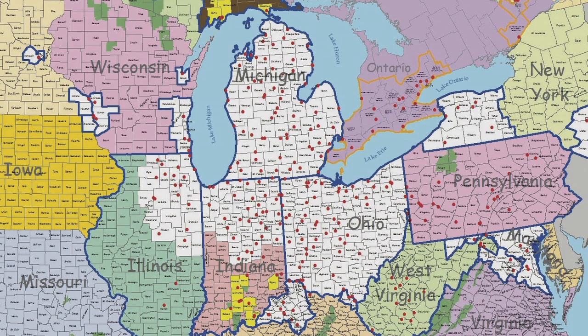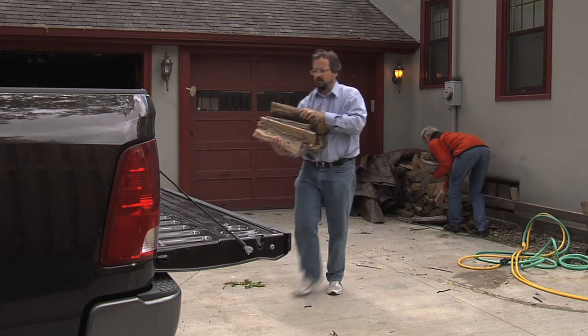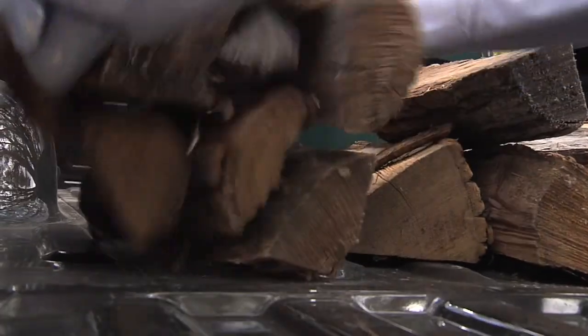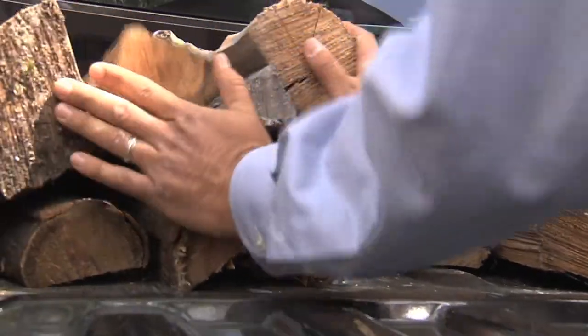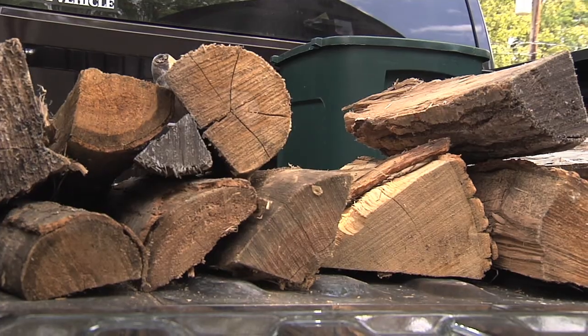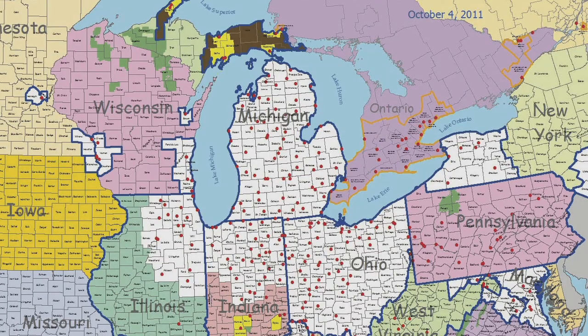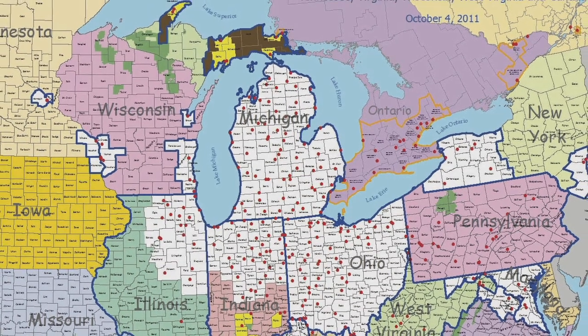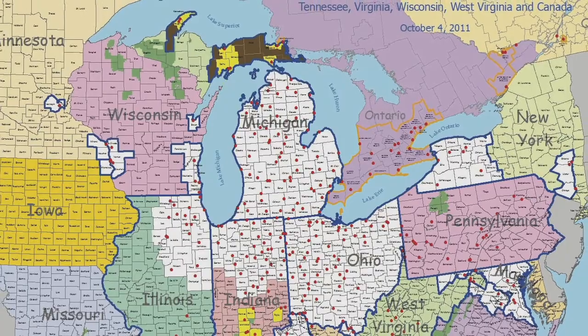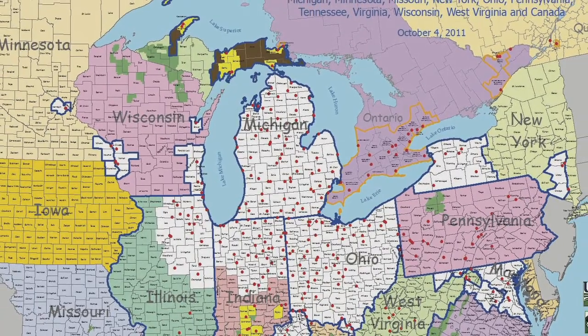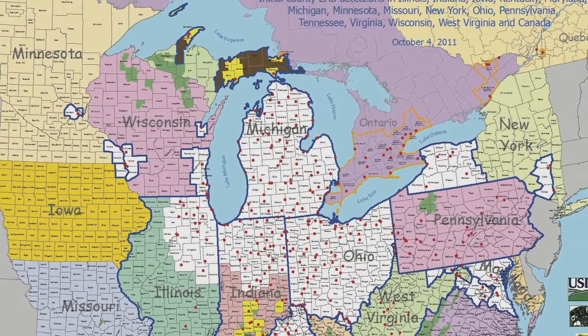The Emerald Ash Borer was initially discovered in the U.S. near Detroit, Michigan in 2002, and is thought to have resided there for ten or more years. Although the borer is able to fly, it has moved long distances in infested logs and firewood. Since that time, the borer has made its way mostly through human efforts from Michigan to the east coast, north into Canada, and south to Missouri.